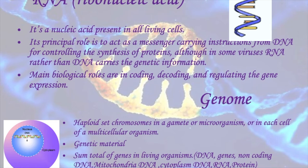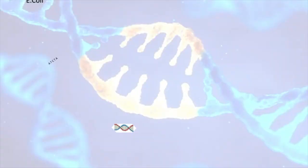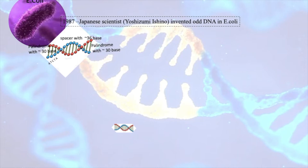What is a genome? A genome is the total combination of DNA, genes, non-coding DNA, mitochondria, and proteins. The combination of all these things is called the genome. These are the basic terminologies we need to know. Now we'll look at the discovery of CRISPR.